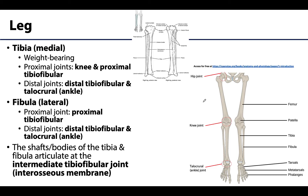Moving to the leg, we have a pair of bones: the medial and considerably larger tibia, which is the weight-bearing bone of the leg, and the fibula, which is lateral and relatively thin. Only the tibia plays a direct articulation role in the knee joint — the fibula does not quite reach the femur — but there will be ligaments that attach to the fibula.